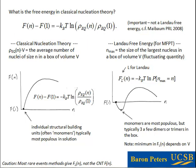In classical nucleation theory, we can think about the average number of nuclei of size N in a box of volume V as the product of V and the equilibrium density of size N. Based on that definition, we have a classical nucleation theory barrier. The reference point is irrelevant, but it starts at nuclei of size 1 — the monomers, our building blocks — which are typically the most populous in solution.